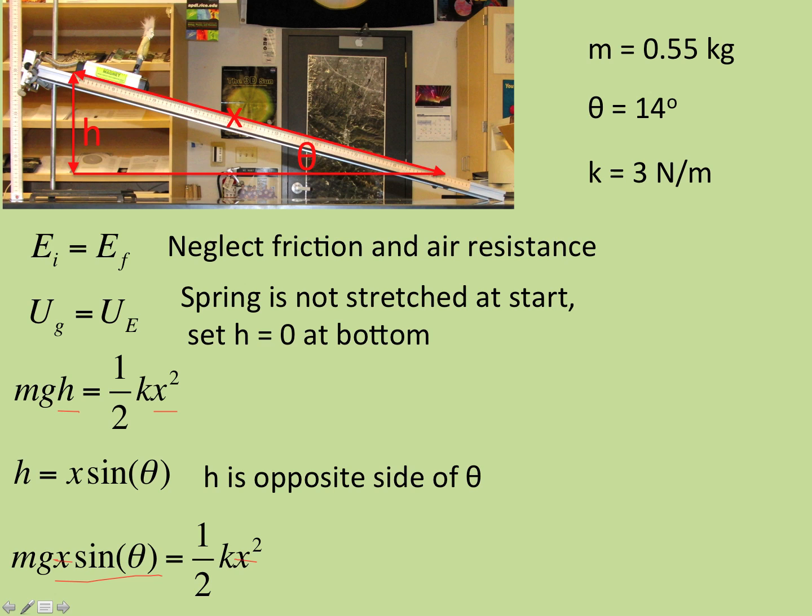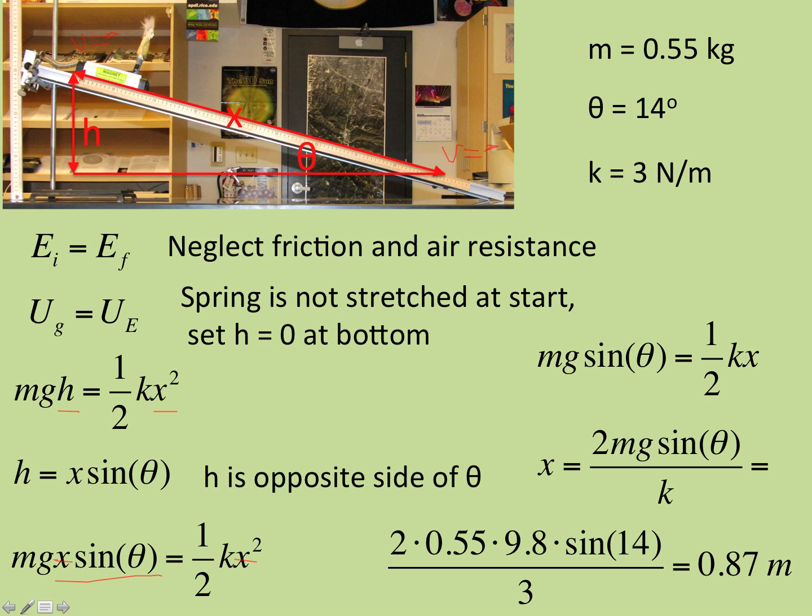That means X equals zero is a solution. We're solving for when is the velocity zero. That makes sense—the velocity was zero here. But we don't want that. We want the next time it's zero. So I solve for the other X, and I get 2MG sine theta over K. That is 0.87 meters.